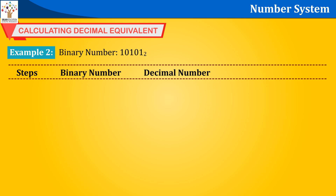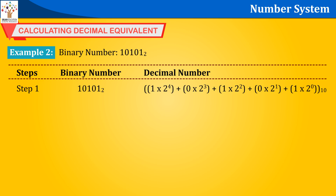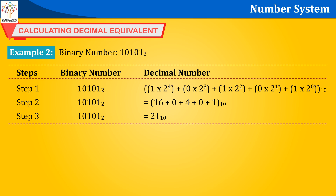Example 2: Binary number 10101 base 2 converted to decimal. Step 1: 1×2⁴ + 0×2³ + 1×2² + 0×2¹ + 1×2⁰. Step 2: 16 + 0 + 4 + 0 + 1. Step 3: 10101 base 2 equals 21 base 10.